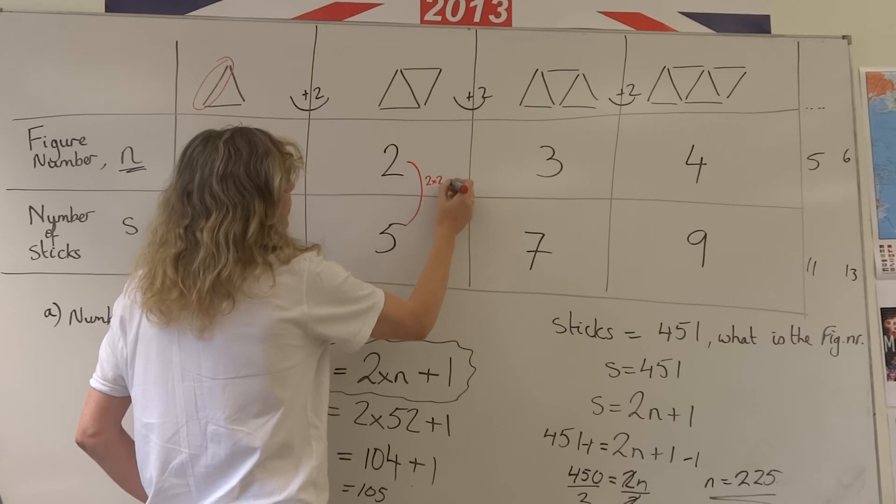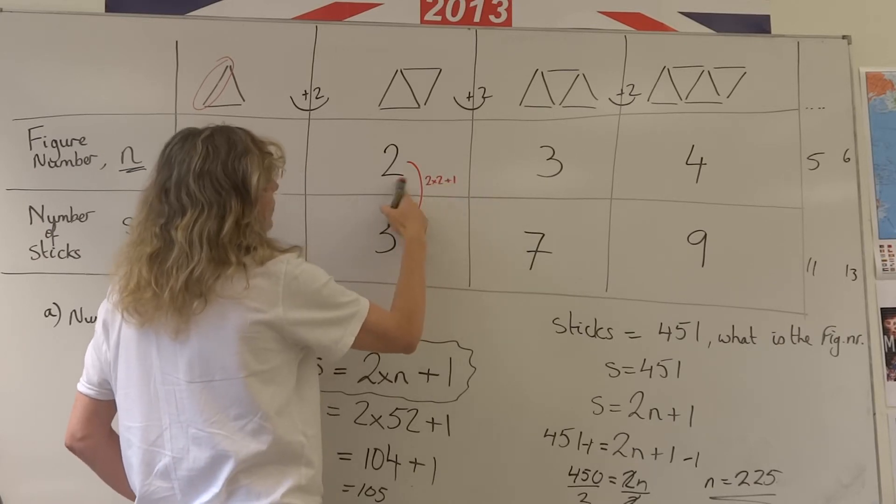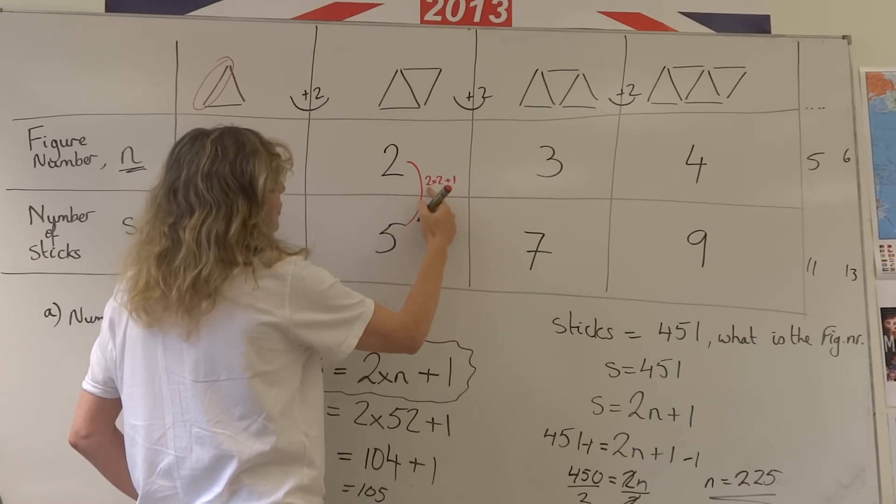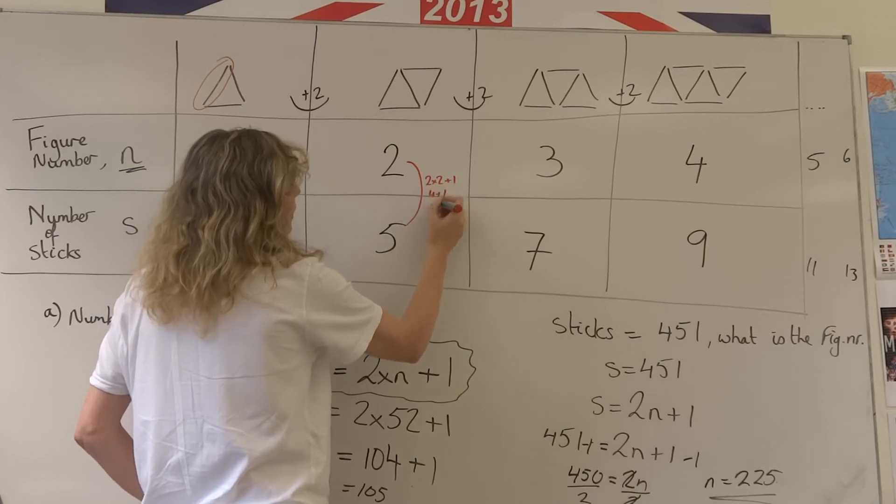Two times two plus one. The figure number is two, we're to multiply n by two. Giving us four plus one which is five.